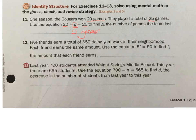Number 12. Five friends earned a total of $50 doing yard work in their neighborhood. Each friend earns the same amount. Use the equation 5 times some amount equals 50. To find r, the amount each friend earns. Five times what equals 50? 10. So if each friend earned 10 bucks, then they would get a total of 50.